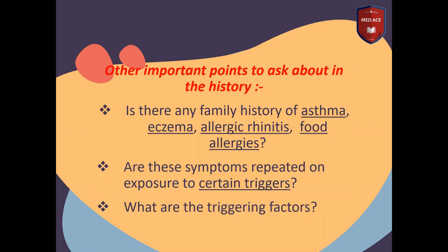Family history is important: we ask if there is asthma, eczema, allergic rhinitis, or food allergies. All these conditions are allergic and related, so each one can be a risk factor for asthma. The genetic component is very important in the etiology of asthma.